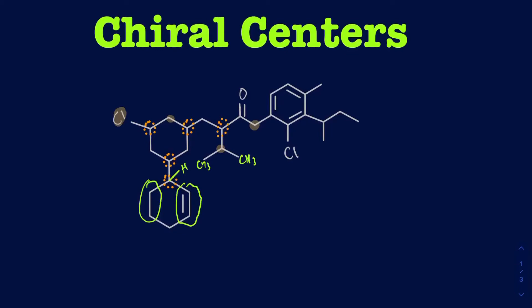This carbonyl carbon is not going to be a chiral center because you've got only three things attached to it — you have to have four at least, so make sure you keep an eye on that. Your aromatic ring is not going to contain any chiral centers either, because aromatics have double bonds and you're not going to have four different things attached to those carbons.